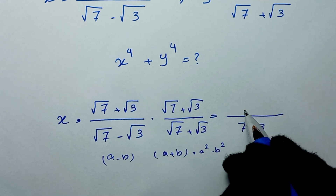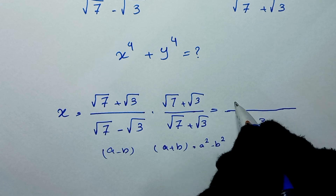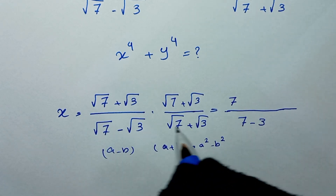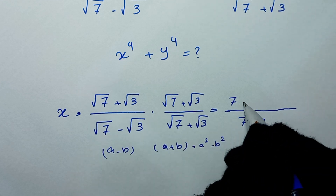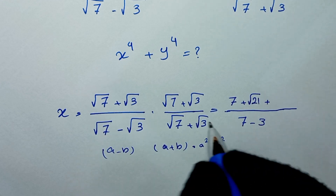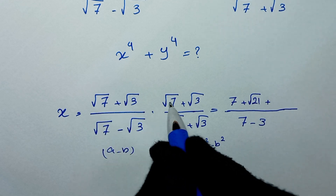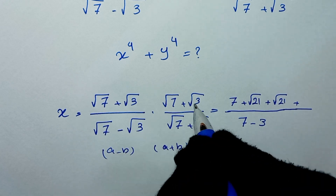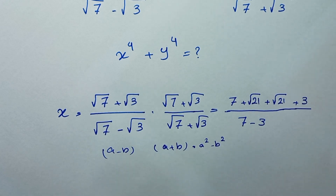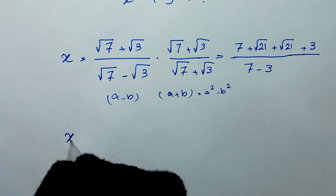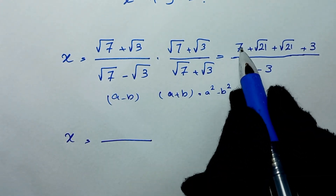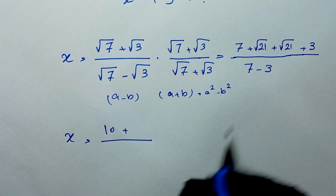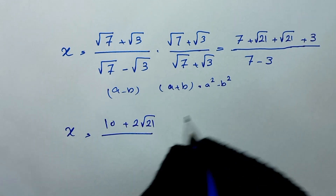For the numerator, square root of 7 times square root of 7 is 7, square root of 7 times square root of 3 gives square root of 21, and square root of 3 times square root of 7 also gives square root of 21. So x equals 7 plus 3 plus 2 square root of 21, which is 10 plus 2 square root of 21 over 4.